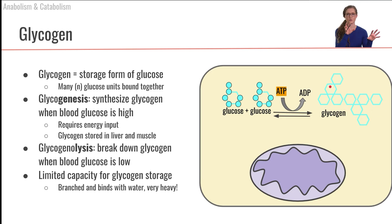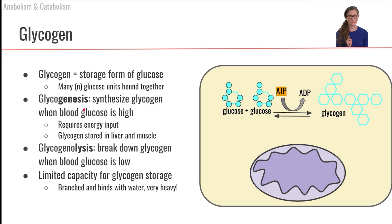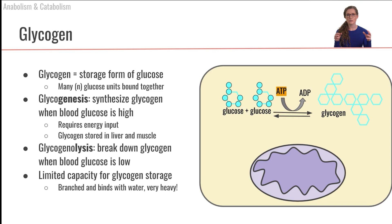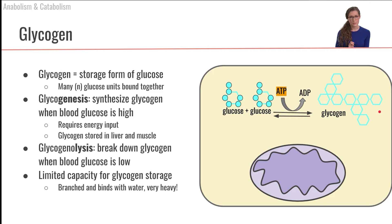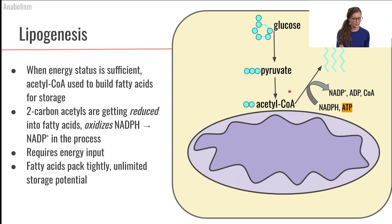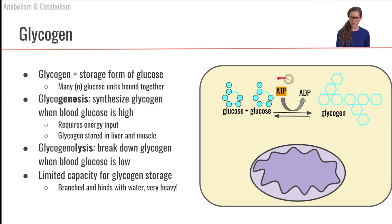When we take individual glucose molecules and bind them together to form glycogen, we call that glycogenesis. Genesis is telling us that we're building something — an anabolic reaction. We are going to undergo glycogenesis when we have high concentrations of blood glucose, so we want to take the glucose out of the blood and store it in the form of glycogen. Like many anabolic reactions, glycogenesis requires an energy investment.